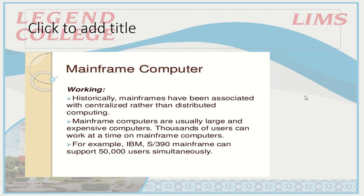In the past, a typical mainframe might have occupied two thousand to ten thousand square feet — a very large clean room with air conditioning. Historically, mainframes have been associated with centralized rather than distributed computing. Mainframe computers are usually large and expensive, and thousands of users can work at a time. For example, the IBM S/390 mainframe can support 50,000 users simultaneously.